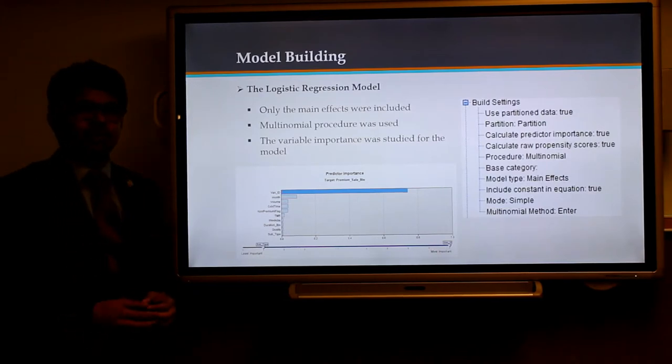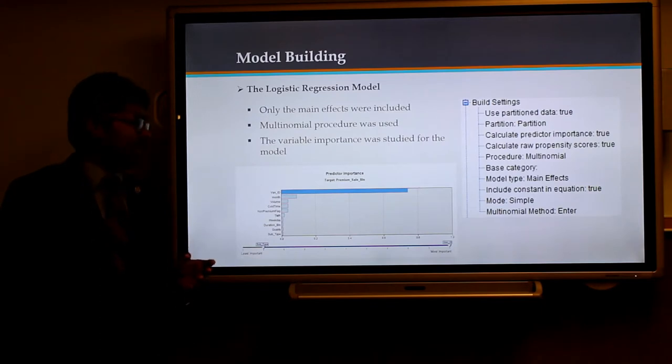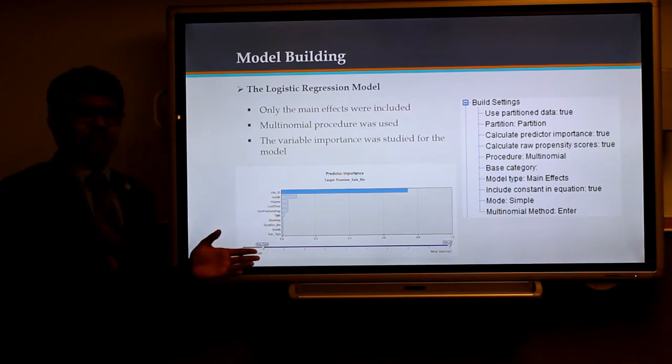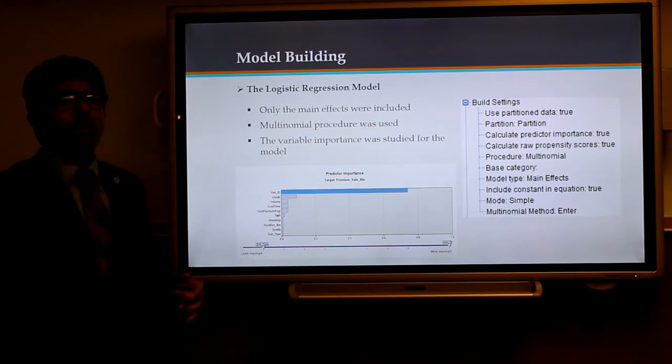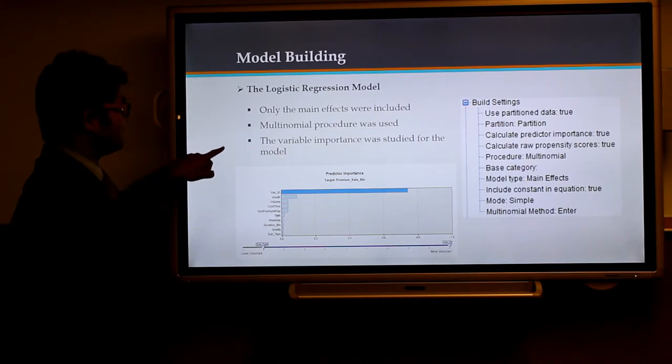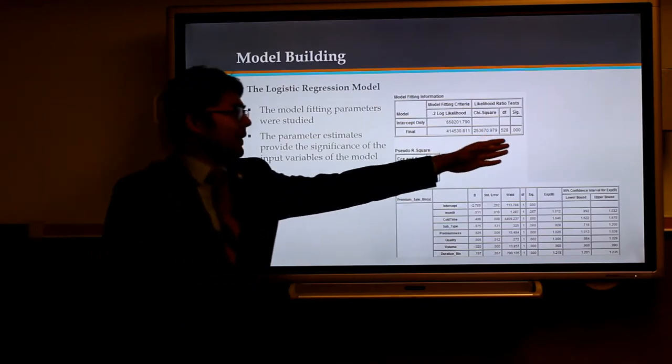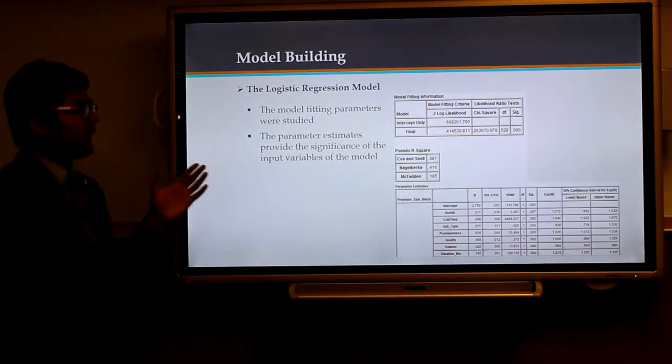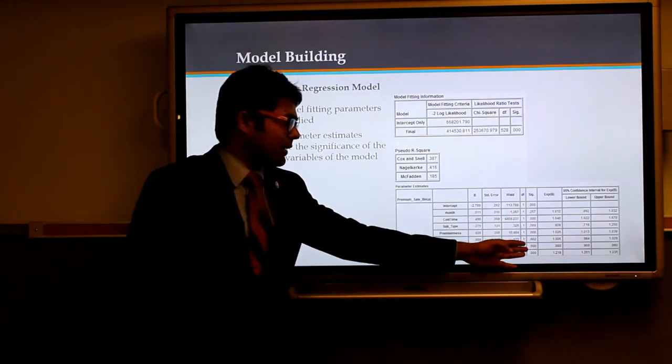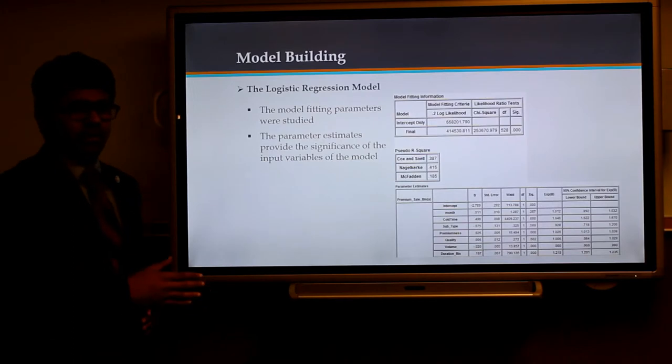The next model built is the logistic regression model. For this model, we included only the main effects and we used a multinomial procedure because the target variable had 4 levels. Variable importance was also studied for this model. We found that WAN ID is the most important factor. WAN ID is the representative ID who is going to each specific outlet and marketing the products. The next important variable was found to be the month like in the decision tree model. Apart from this, we studied the model fitting parameters and parameter estimates. The model fitting parameters gave us a significance of 0.00, which explains that this model is very good compared to the baseline model. Coming to the parameter estimates, we could see that there are some variables that are not significant, like the month which has 0.257 significance, and subtype and quality. We need to work on this when assessing the model.